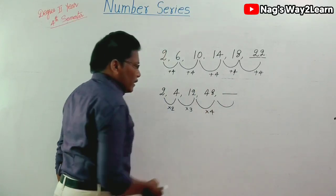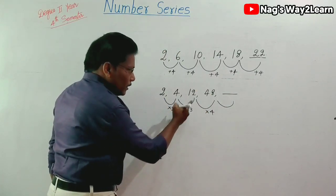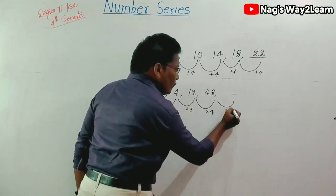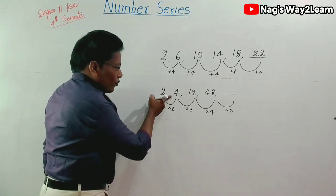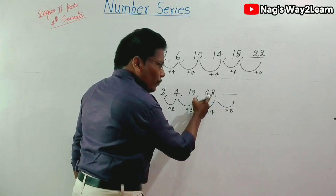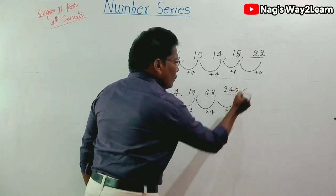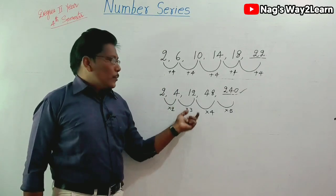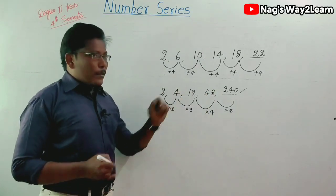The next one should be multiplied by 5. So 2×2=4, 4×3=12, 12×4=48, and 48×5=240. The answer is 240. In this way, a series of numbers is given and you need to find the next number. This is type 1.